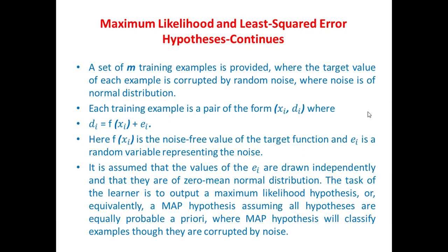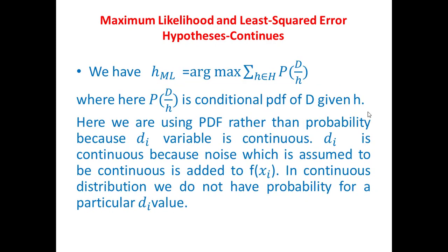We expect the MAP hypothesis will classify examples even though they are corrupted by noise. We have hml = argmax over h in H of the sum of P(d|h). In our earlier examples, P referred to probability, but in this present discussion, capital P refers to the probability density function.